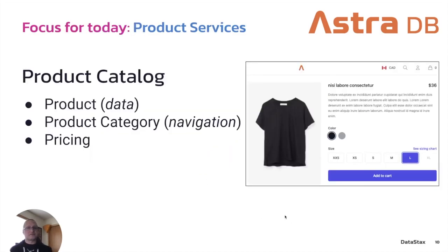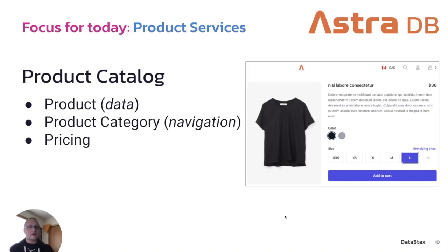As far as product services go, there are three we're going to work through today. First is the product data service, which has all the details about each product. Next is the product category navigation service, because all products sit inside a hierarchy of categories that we can navigate through. And each product has a price, so we also need a pricing service to handle that.